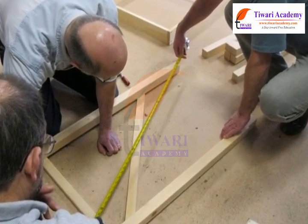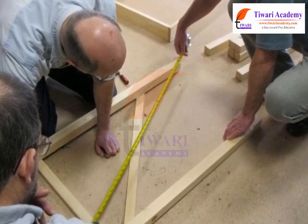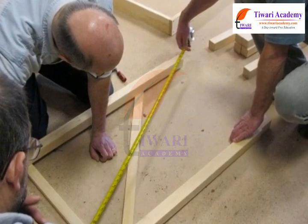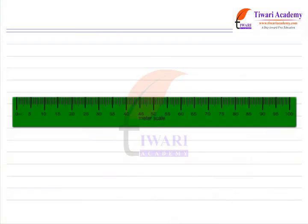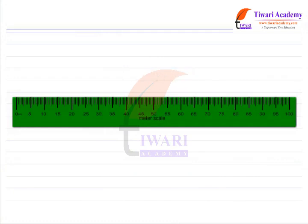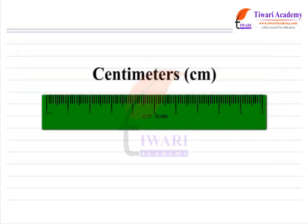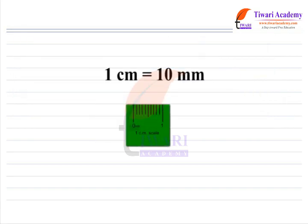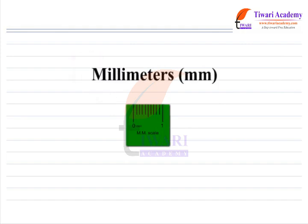The system of standard units of measurement used now is known as the International System of Units, or SI units. The SI unit of length is a meter. Each meter is divided into 100 equal divisions called centimeters. Each centimeter has 10 equal divisions called millimeters.